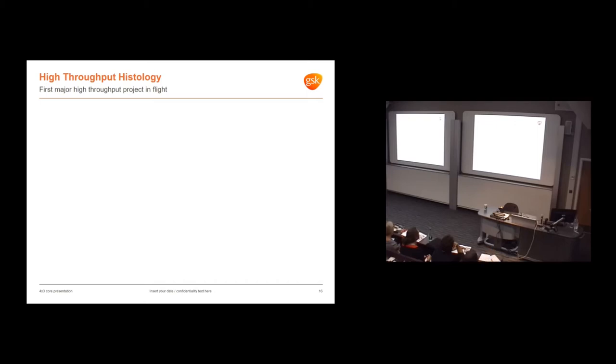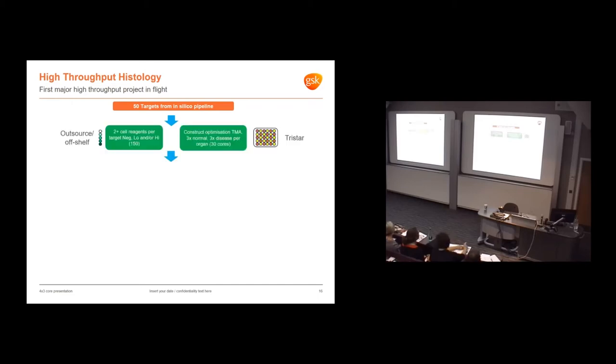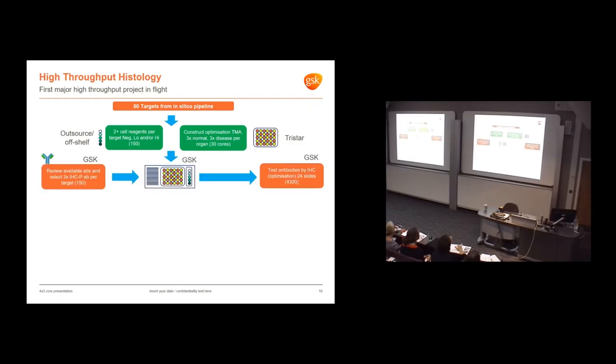For high-throughput histology, we've spent a lot of time building up pipelines, capabilities, and contracts with suppliers. We now have our first project in flight with 50 targets from an in silico pipeline. We're using off-the-shelf or outsourced cell line generation until we have negative, low, or high overexpressing cell lines. We have TMAs constructed with a small number of cores for each organ of interest. We're taking up to three antibodies specified for IHC in paraffin per target, so 150 antibodies in just this one project.